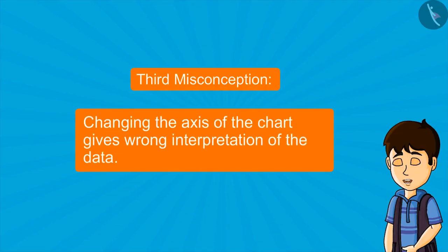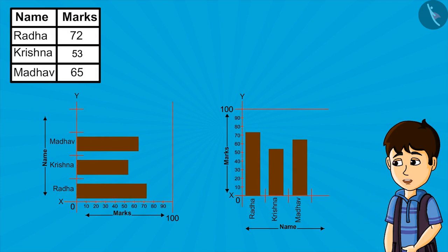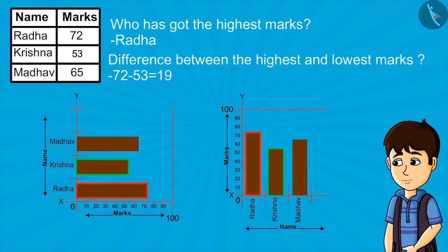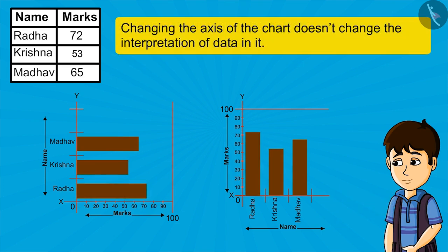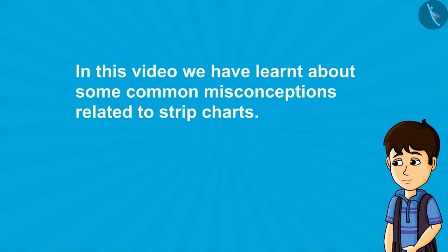Some people also believe that changing the axis of the chart gives a wrong interpretation of data. Look at both these charts carefully — we have only changed the coordinate axis, but we are still getting the same information: who has got the highest marks, the difference between the highest and lowest marks, etc. So we can say that changing the axis of the chart does not change the interpretation of the data.